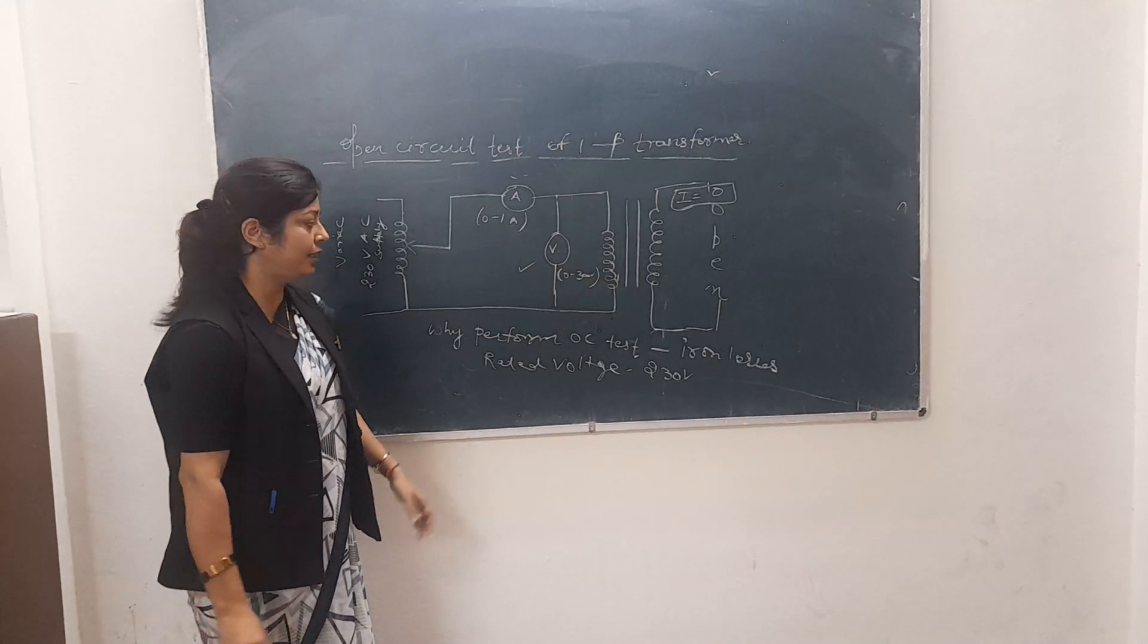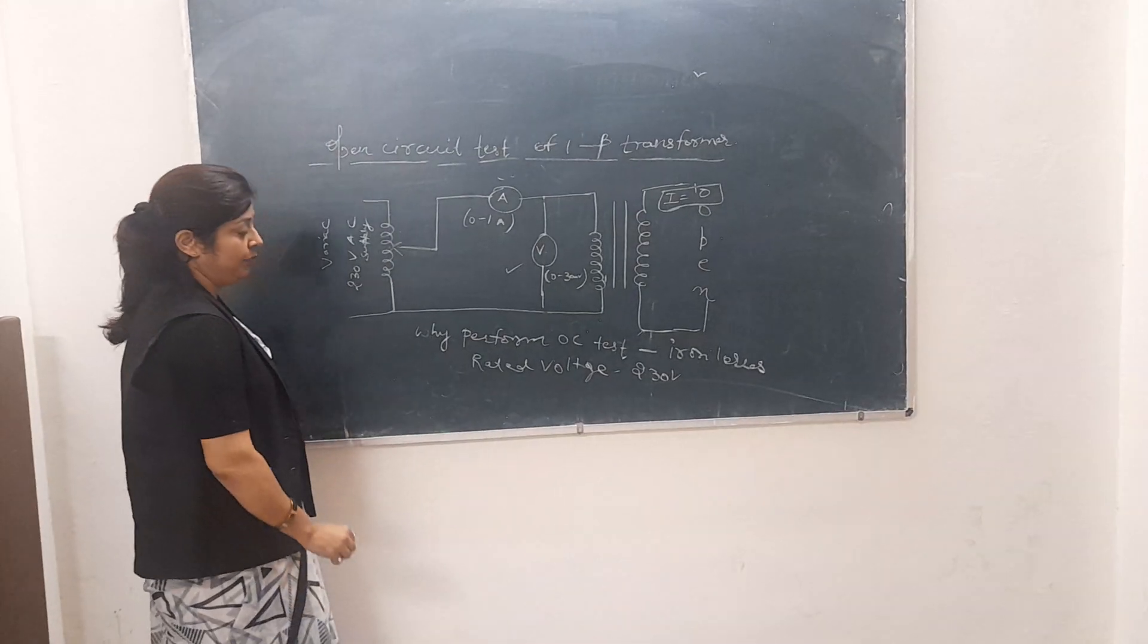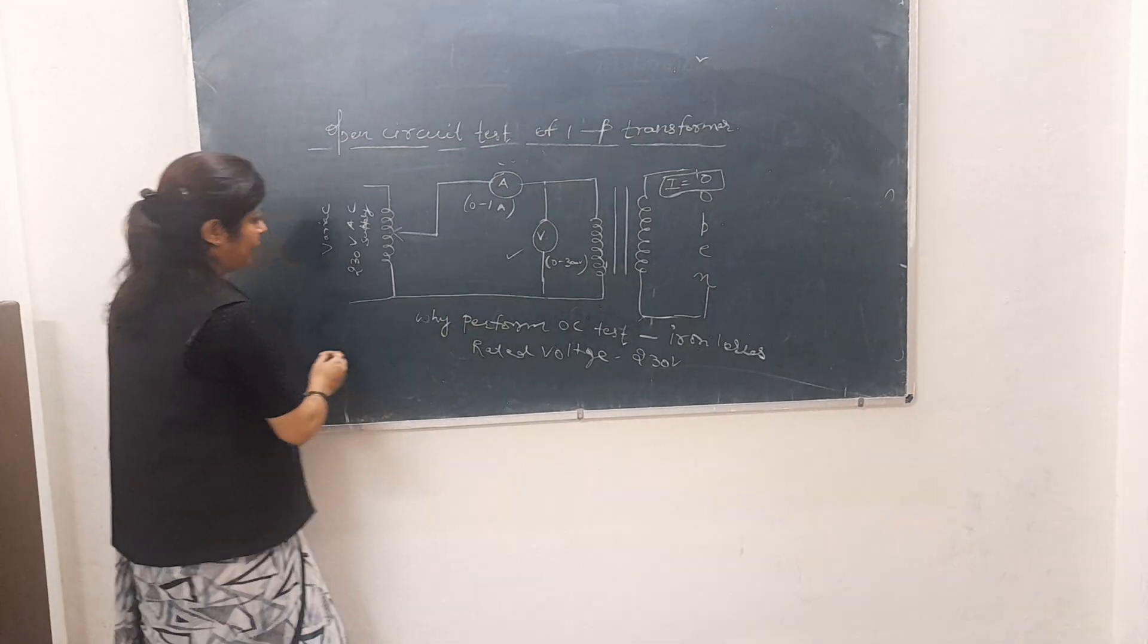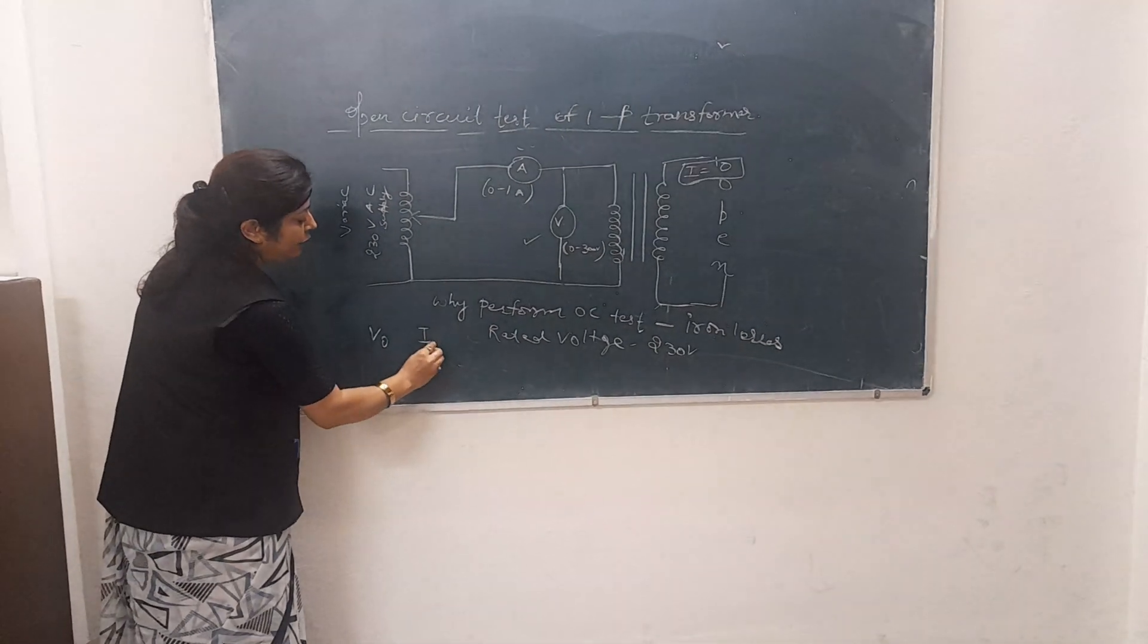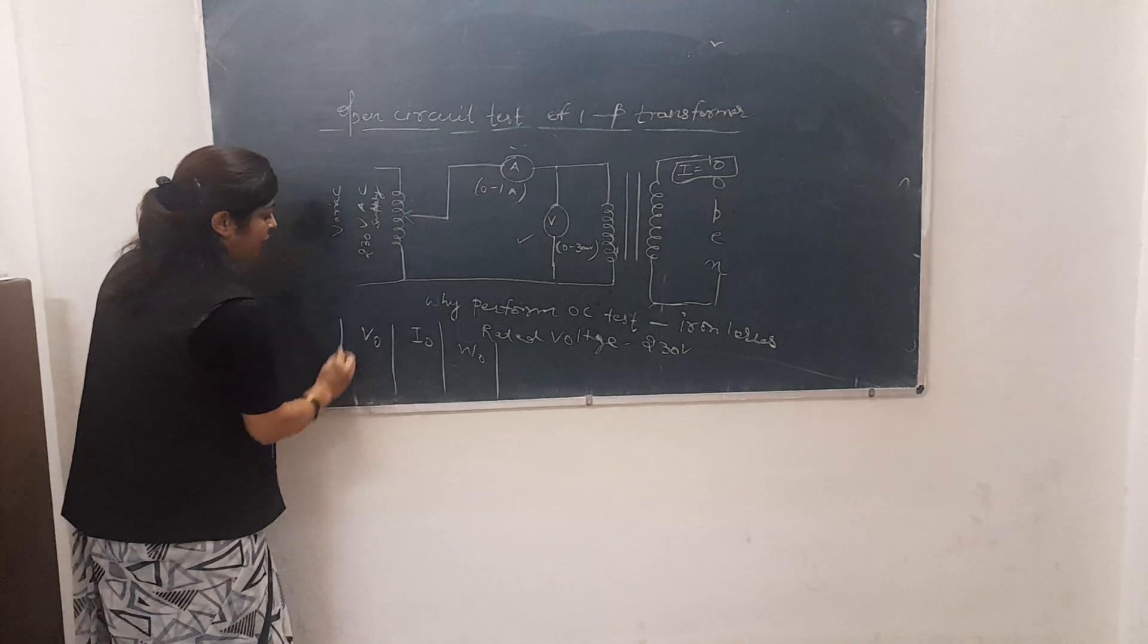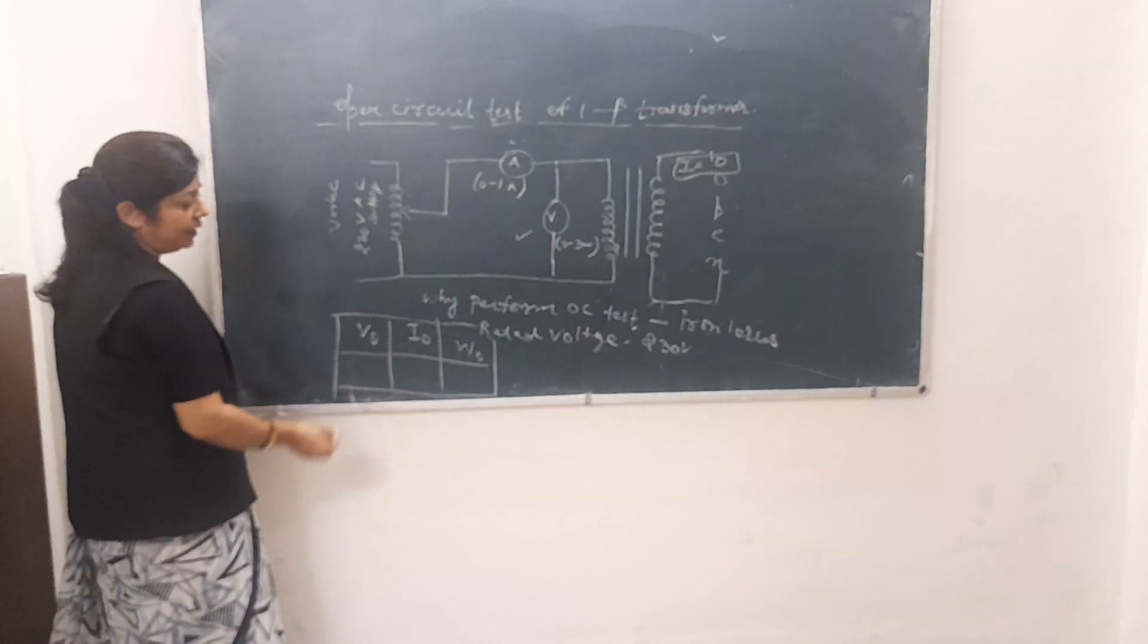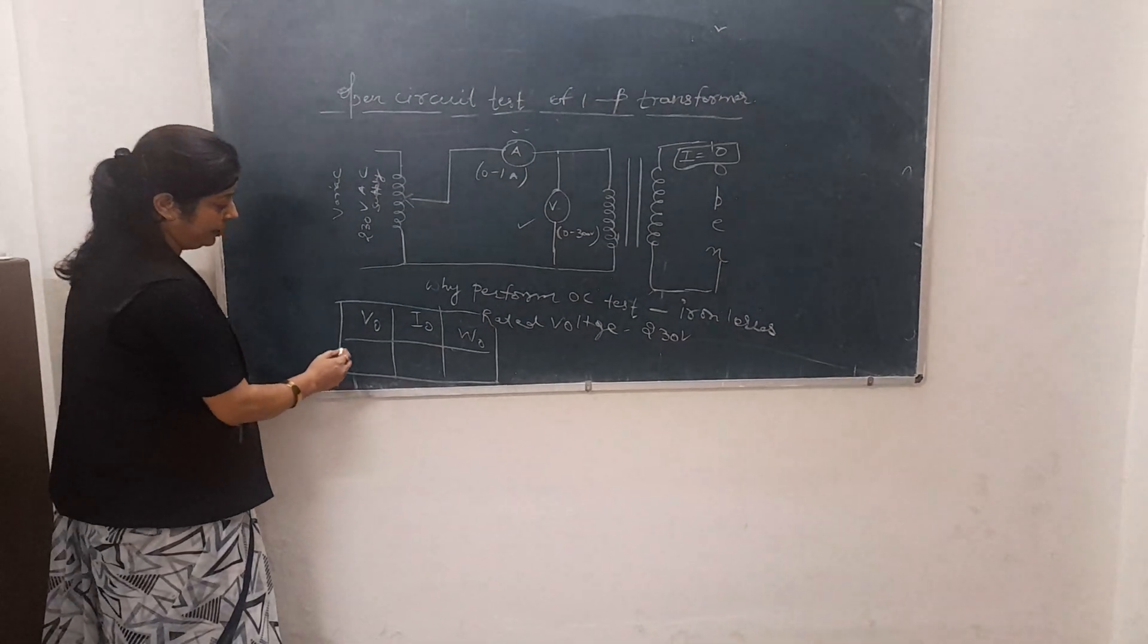You will see how many iron losses there are. We are using rated voltage. The parameters are called V0, I0, and W0, where V0 is the voltage of open circuit, I0 is the current, and W0 is the iron losses. V0 is already fixed at 230V.